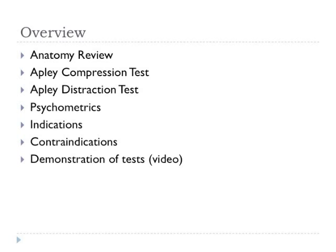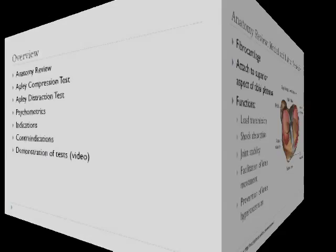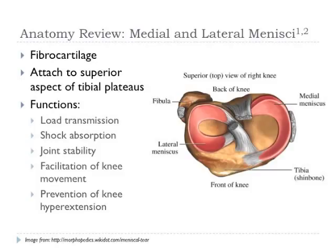Let's review some knee anatomy. The Apley tests can be used to examine pathology of the menisci and collateral ligaments. The crescent-shaped medial and lateral menisci are made of fibrocartilage and attached to the superior aspect of the tibial plateaus, lying between the femoral condyles and tibial plateaus in the tibiofemoral joint.